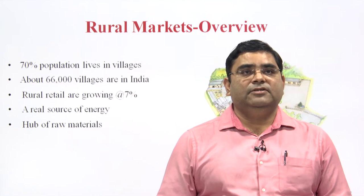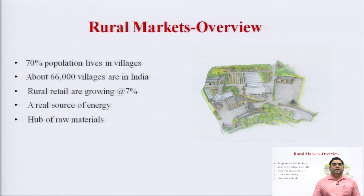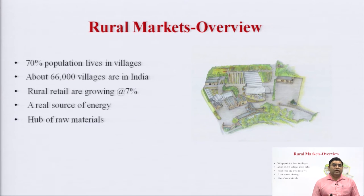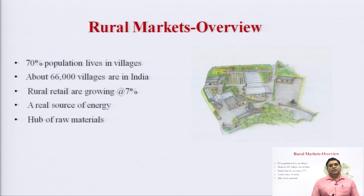We have discussed in previous lectures about the retail sector, about the retail market, and how it has evolved over a period of time from developed countries to developing countries like India. How the organized sector has evolved from western countries, where it is around 95 percent, and in India it has grown up to 10 percent of the organized retail sector. Now in India, there is a change taking place from urban cities to the rural market — from urban consumers to rural consumers, there is a shift.